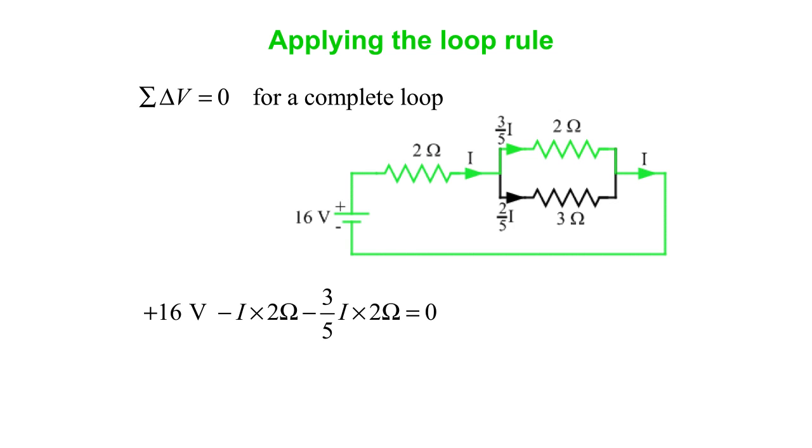Note that if we went through the other path, we would have gone 2 fifths of I times 3 ohms, and of course that's the same as 3 fifths of I times 2 ohms. So you can solve that nicely for the current. The whole current in the circuit, you get 5 amps. That means 3 amps is going through the 2 ohm resistor, and 2 amps is going through the 3 ohm resistor. All right, so that's another way to do a solution to find current, and then we could find voltage and power or whatever we want.